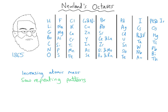What Newlands saw was that every eighth element would have similar properties to one that came before it. For example, starting at hydrogen and counting on seven places brings you to fluorine; counting on seven more from fluorine brings you to chlorine — and we know chlorine and fluorine are in the same group. Starting at lithium and counting on seven brings you to sodium. He called this the Law of Octaves because an octave is a series of eight notes with regular intervals, and he believed similar elements were spaced at a sequence of every eight.